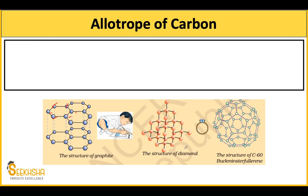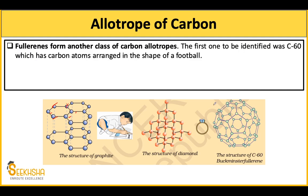Looking at the shapes: graphite has a hexagonal structure; diamond has a 3D structure as we discussed; and this is C60, also called fullerene. Fullerene is from another class of carbon allotropes. The first one to be identified was C60, which has carbon atoms arranged in the shape of a football.